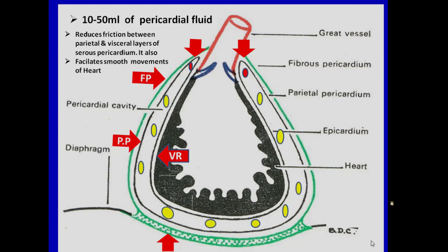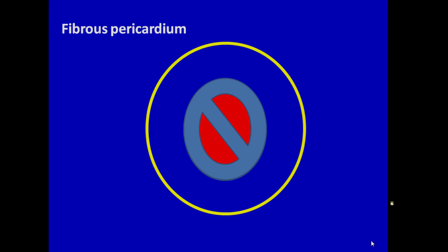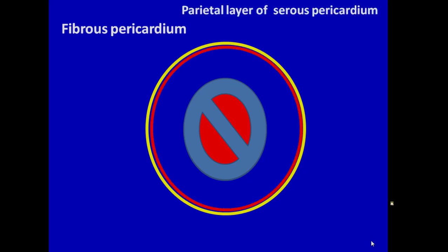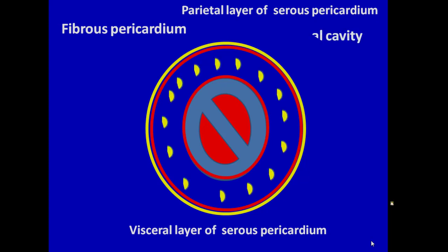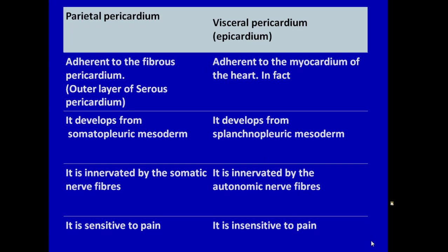This fluid facilitates smooth movements of the heart, as shown in this animation. Now let us go to this transverse section to understand the anatomy of the pericardium. The heart is enclosed outside by fibrous pericardium. The parietal layer of serous pericardium lines the fibrous pericardium. The visceral layer of serous pericardium lines the heart. Between the two layers is the pericardial cavity containing pericardial fluid.